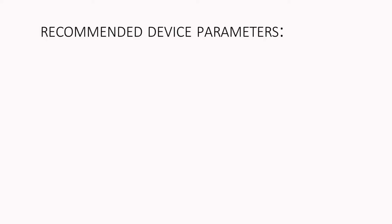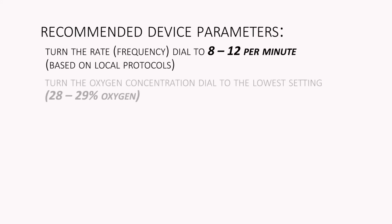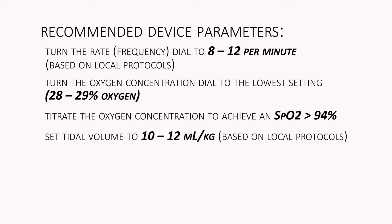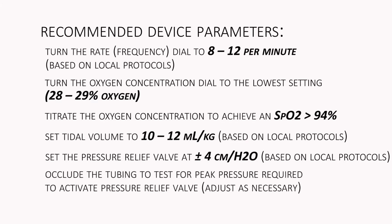Recommended device parameters are: turn the rate dial to 8 to 12 per minute, turn the oxygen concentration dial to the lowest setting between 28 and 29 percent oxygen, and titrate oxygen concentration to achieve an SpO2 greater than 94 percent. Set tidal volume to 10 to 12 milliliters per kilogram. Set the pressure relief valve at plus or minus 4 centimeters of H2O. Occlude tubing to test for peak pressure required to activate the pressure relief valve and adjust as necessary.